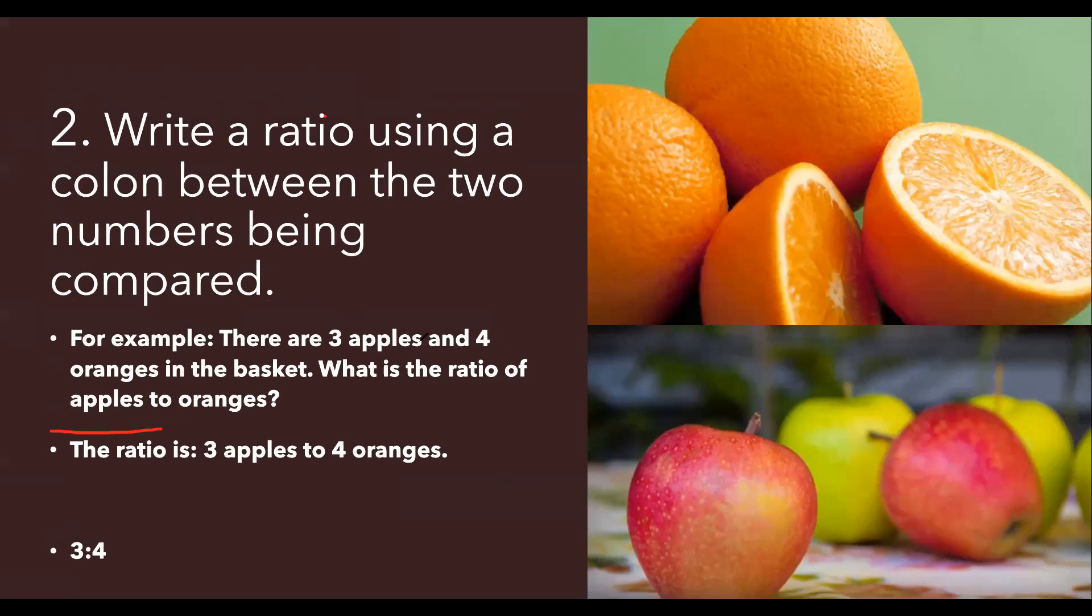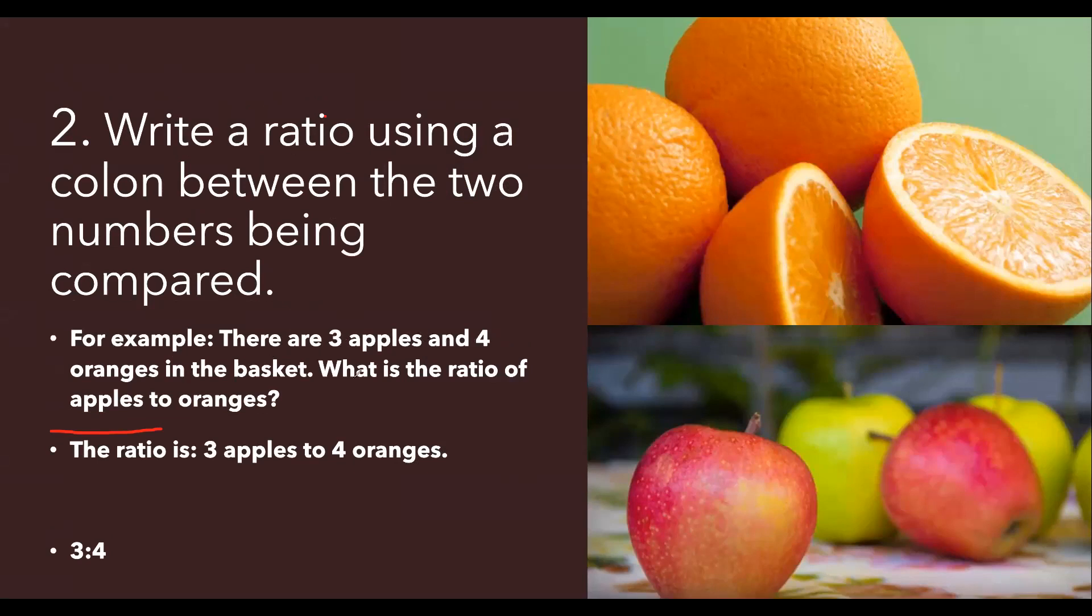Number two is the actual form which we are going to notice in most of the questions. For example, there are three apples and four oranges in the basket. What is the ratio of apple to orange? So we simply write three apples to four oranges, then three is to four. So these two dots that you put in are actually read as 'is to'.